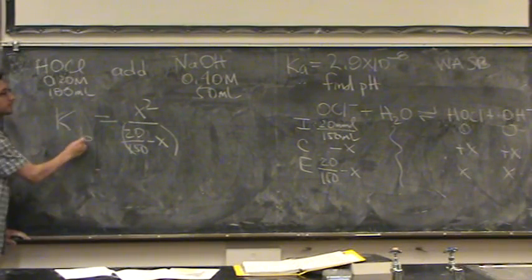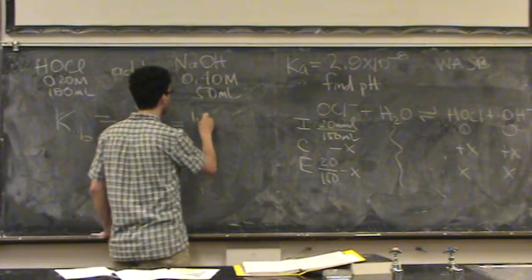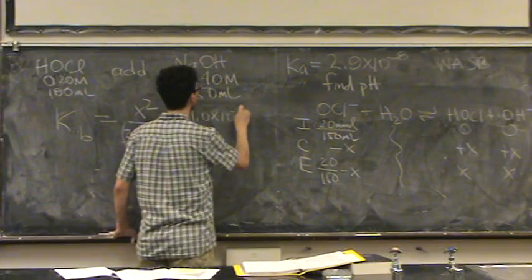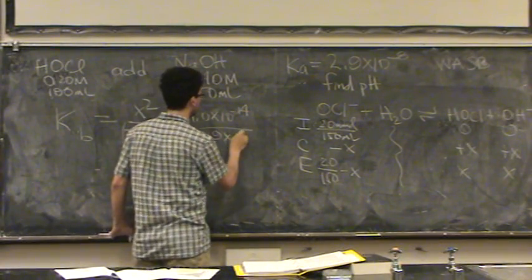It's KB, because that's a base. So, this is KW over KA, or KW is 1.0 times 10 to the minus 14. KA is given 2.9 times 10 to the minus 8.